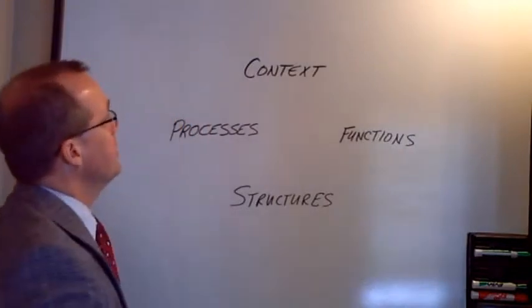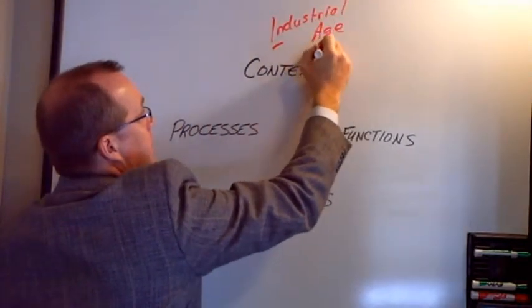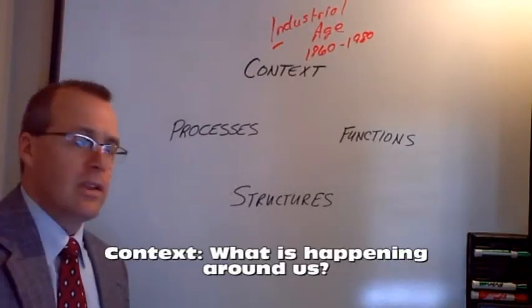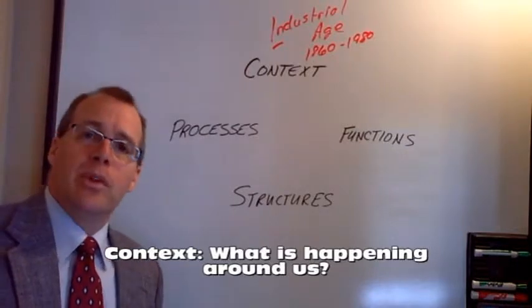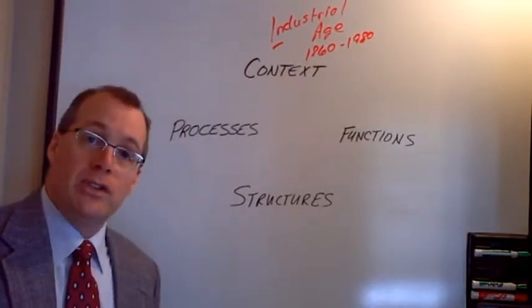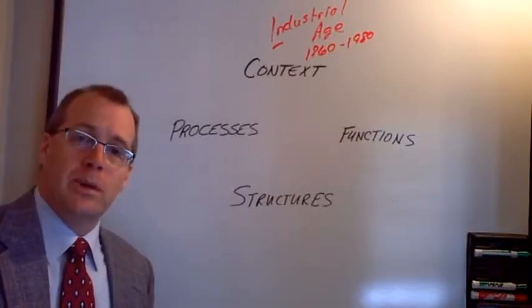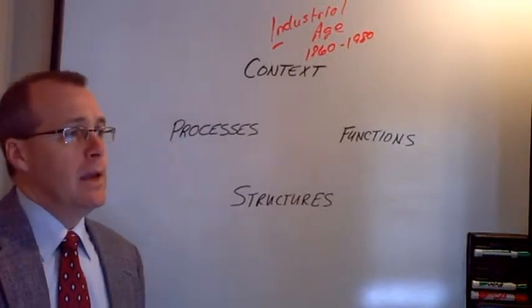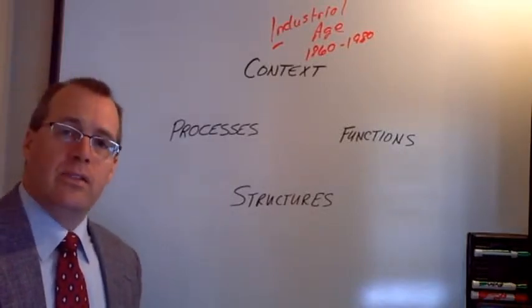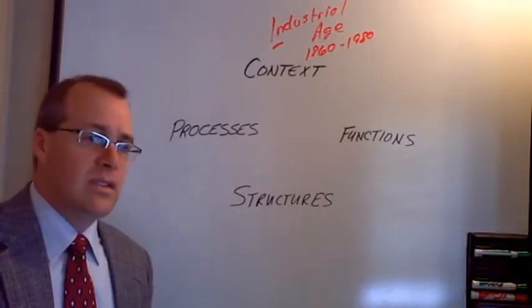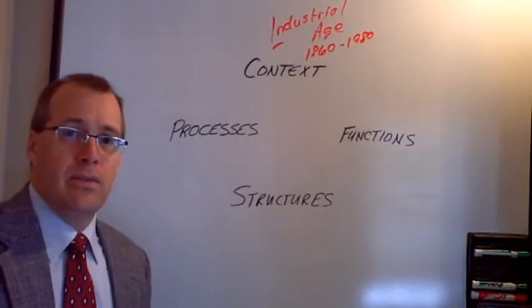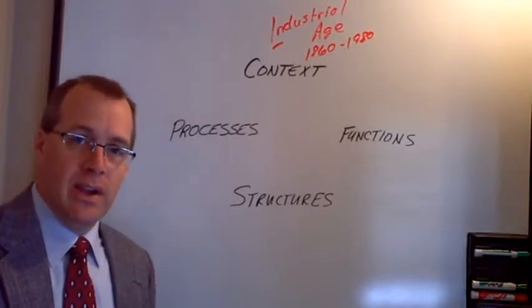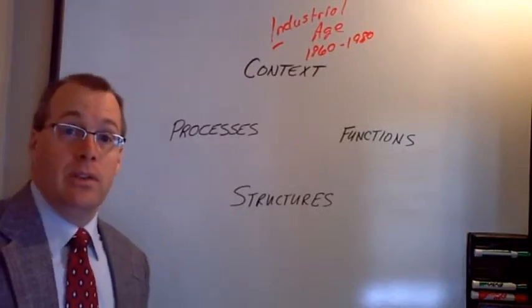And so the industrial age comes with a whole new context to it. 1860 to about 1980, arguably. So the industrial age came with a whole new context, as I mentioned. And that context was this: We have mass immigration, mass European immigration. We have a mass migration to cities. And for the first time, we have more people working for somebody else for an hourly wage than we've ever seen before. That was almost unheard of before the industrial revolution. And so this context created all kinds of issues.